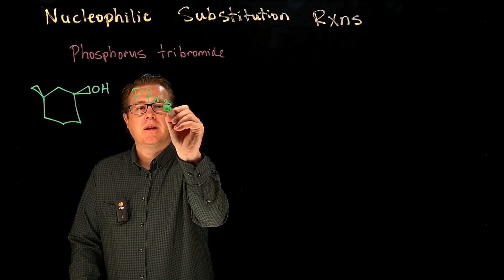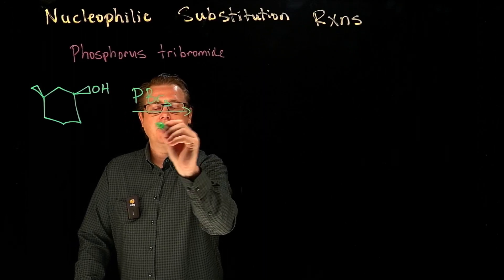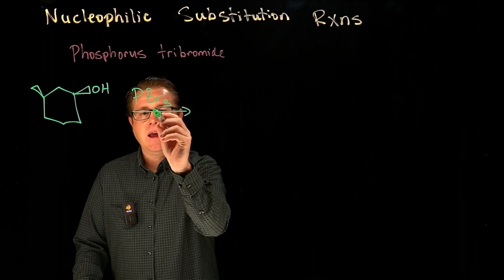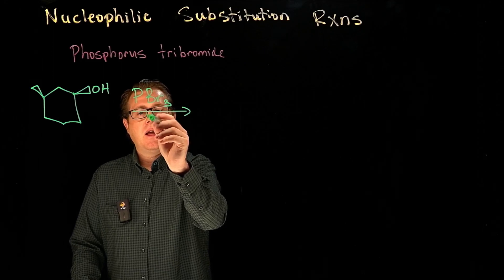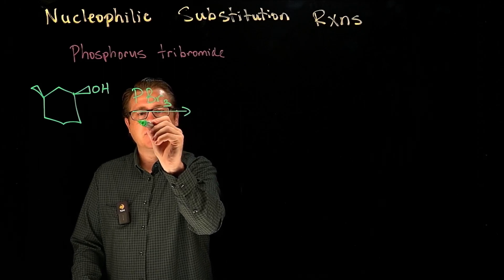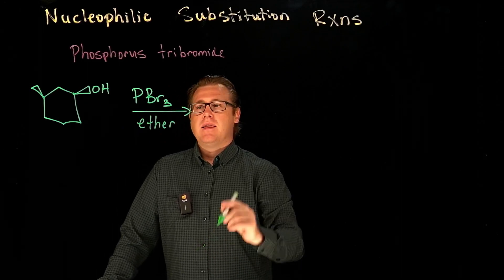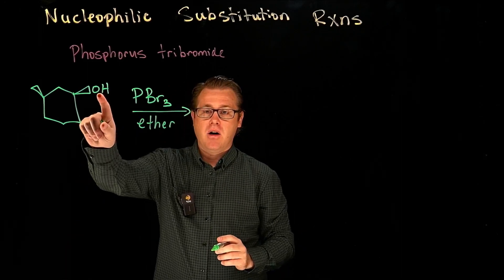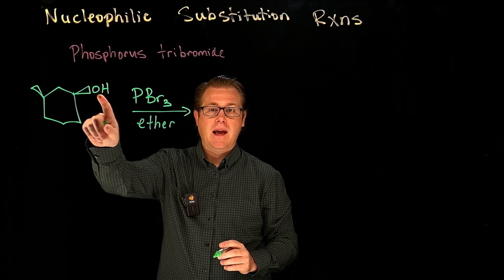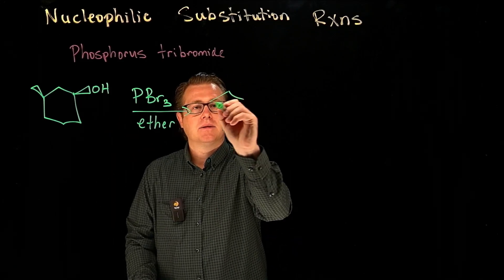so that's phosphorus tribromide, PBr₃, and we do this in an aprotic solvent, ether. That's going to convert the alcohol into an alkyl halide, like this.